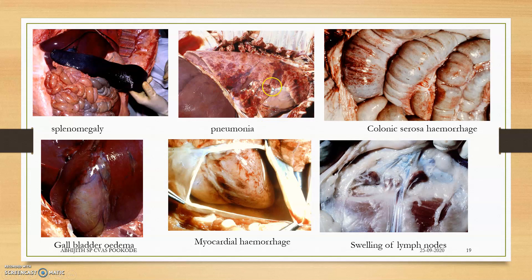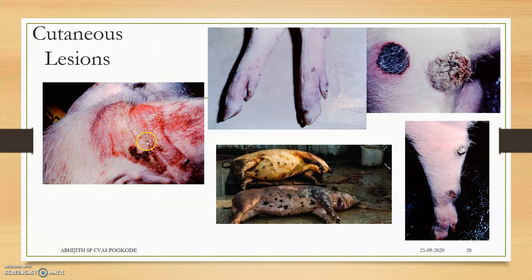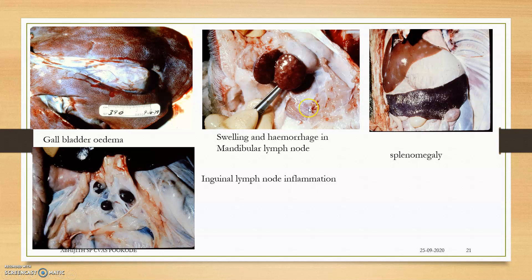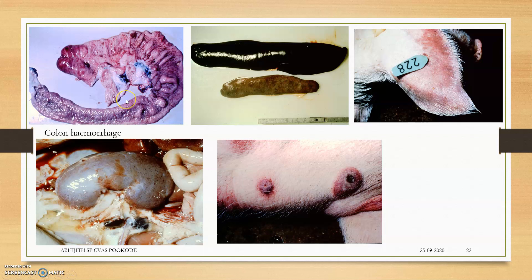Myocardial hemorrhage with small hemorrhagic spots is seen. Gall bladder edema is present. Swelling of lymph nodes — retroperitoneal and pharyngeal lymph nodes. Cutaneous lesions include necrosis near the perineum, necrosis of the foot region, and necrosis in the anal region with point hemorrhage spots. The virus does not produce many lesions in the intestinal tract.